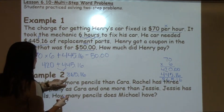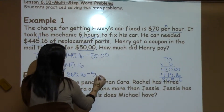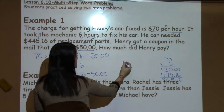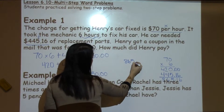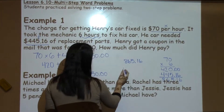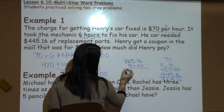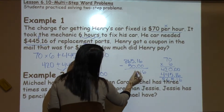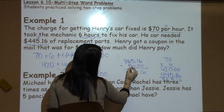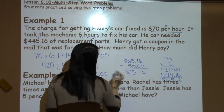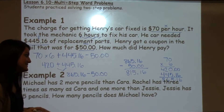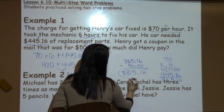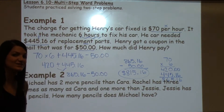Good thing he's got a coupon, because that is quite a bit to spend! He's going to take $50 off for that coupon. So I take $865.16 minus $50. 6 minus 0 is 6, 1 minus 0 is 1, 5 minus 0 is 5, 6 minus 5 is 1, and then I have the 8. So Henry has to pay $815.16 to get his car fixed.